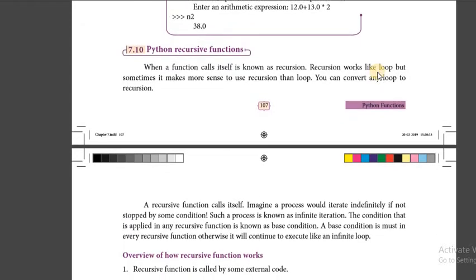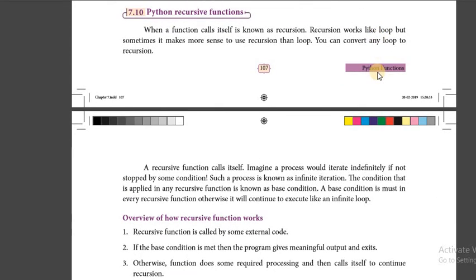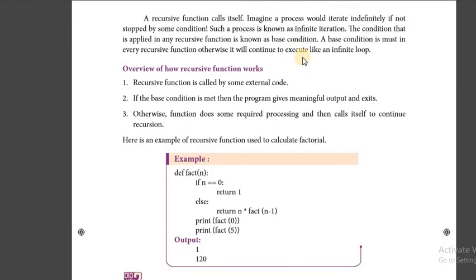The fourth type of function is the recursive function. A function that calls itself is called a recursive function. When a function calls itself, it is known as recursion. Recursion works like a loop, but sometimes it makes more sense than a loop — you can convert any loop into recursion. If no condition is specified in a loop, it will run indefinitely.